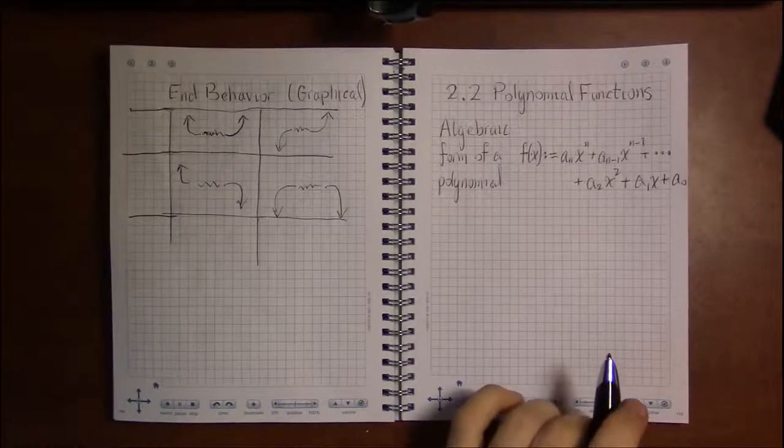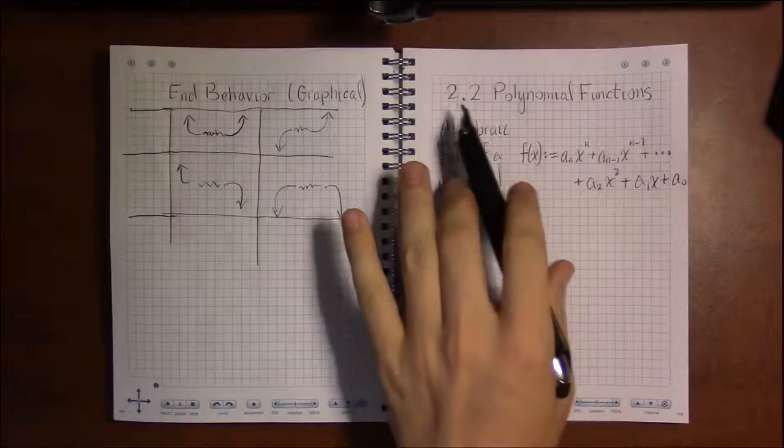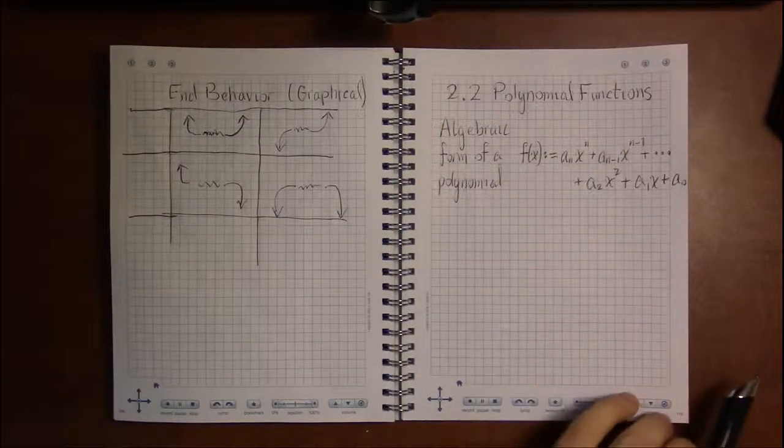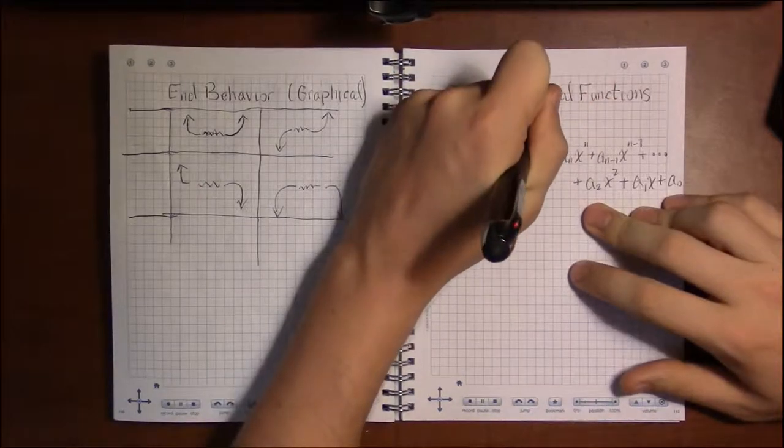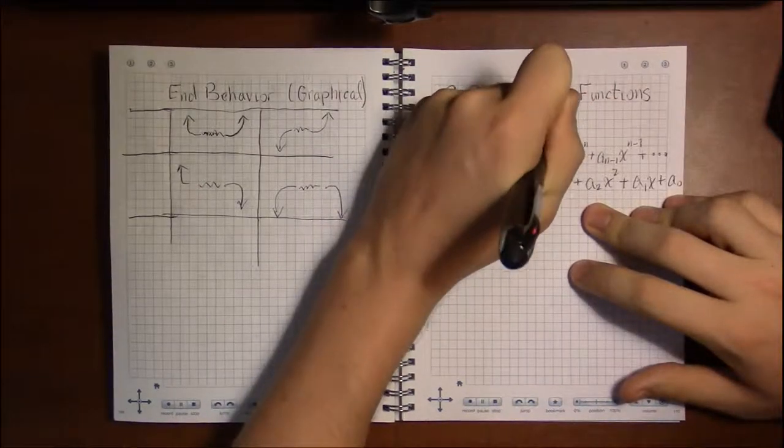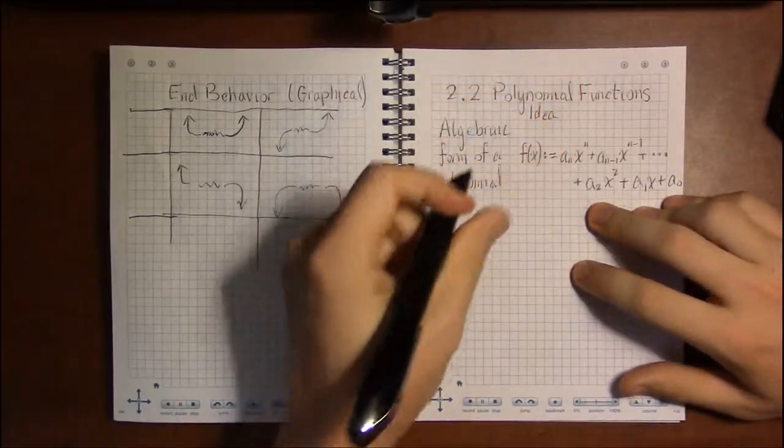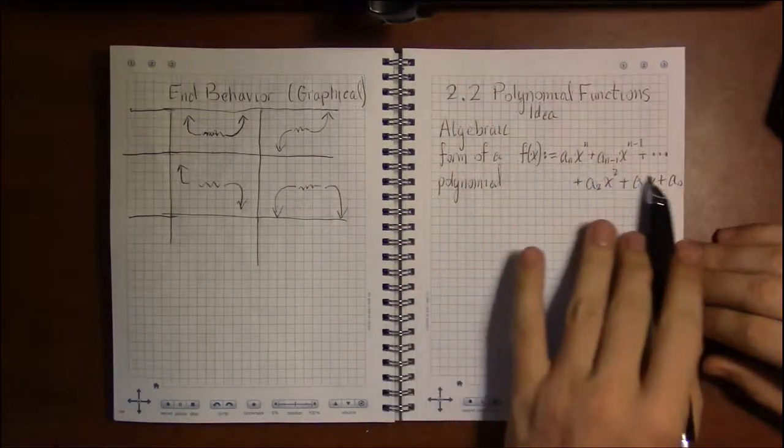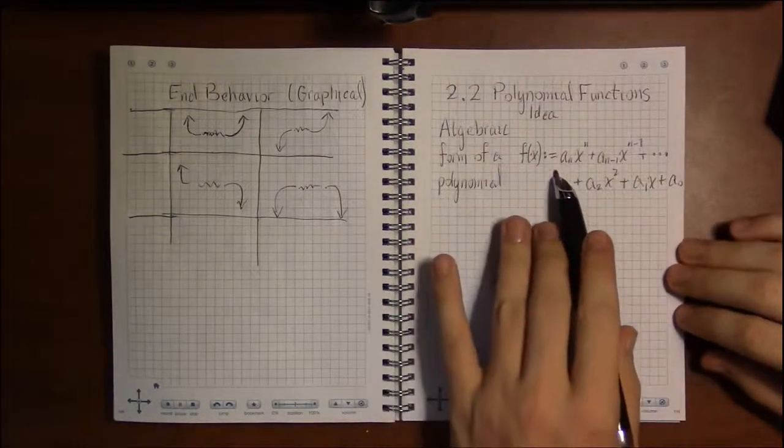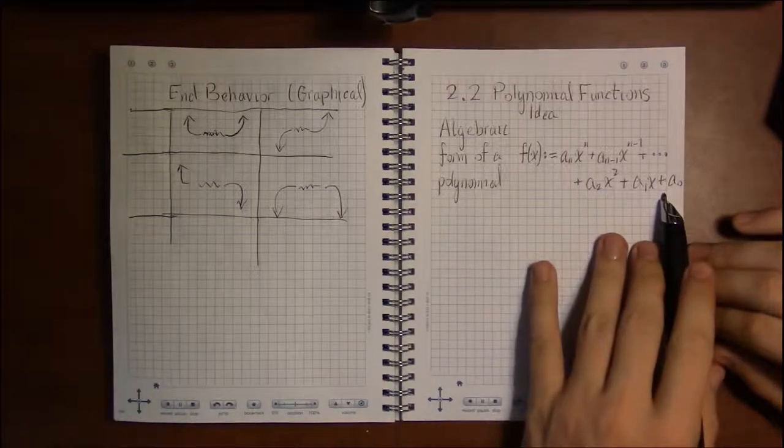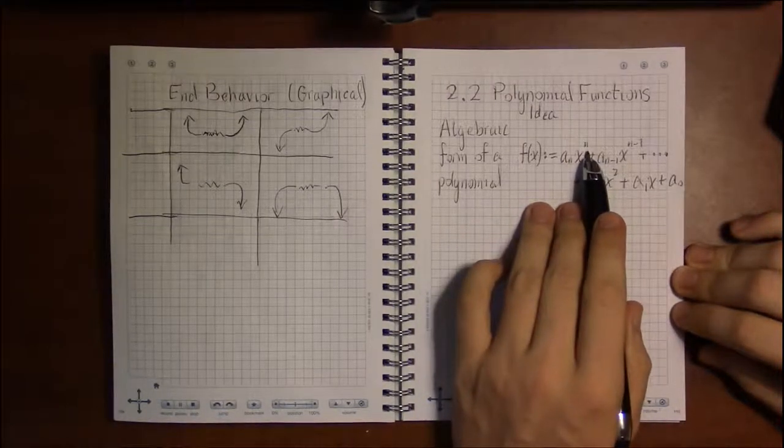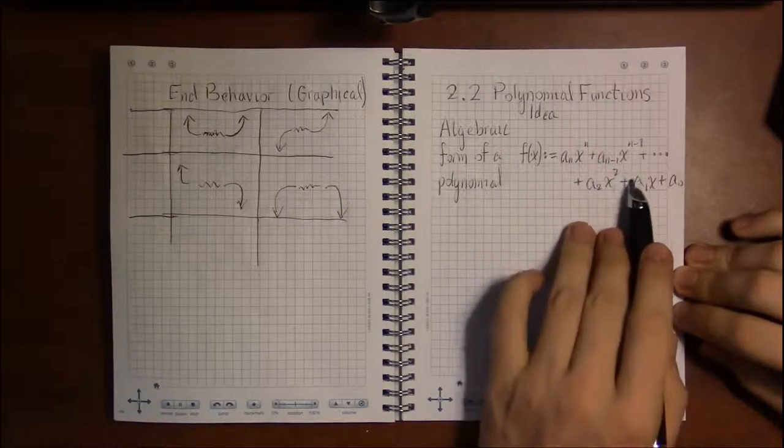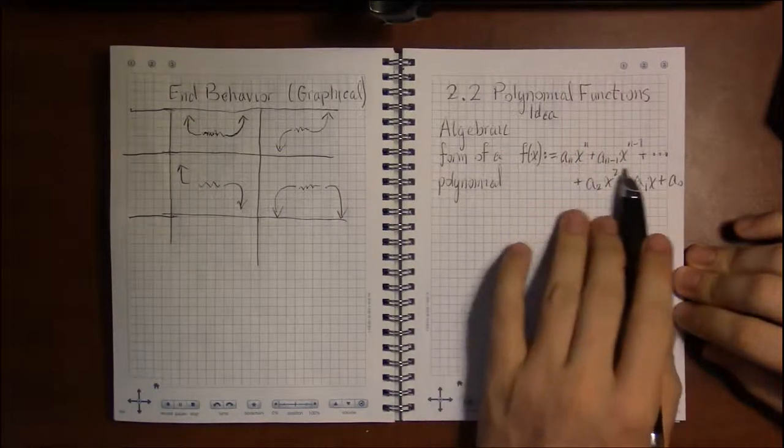Alright, so let's talk about section 2.2 where we're dealing with polynomial functions. The idea here is to introduce polynomial functions. Their algebraic form looks like this, where we have numbers times x to positive integer powers as they go down.